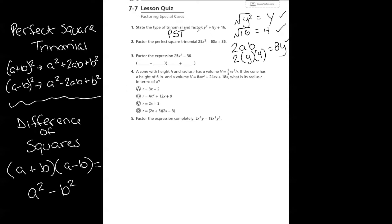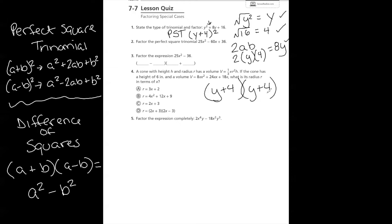To factor it, take the square root of the first term, which is y, and the square root of the last term, which is four. Because the first symbol is positive, we say plus, giving us (y+4)². If you don't remember the shortcut, you could still use factoring: find two numbers that multiply to 16 and add to 8. But you can see the shortcut is much faster.